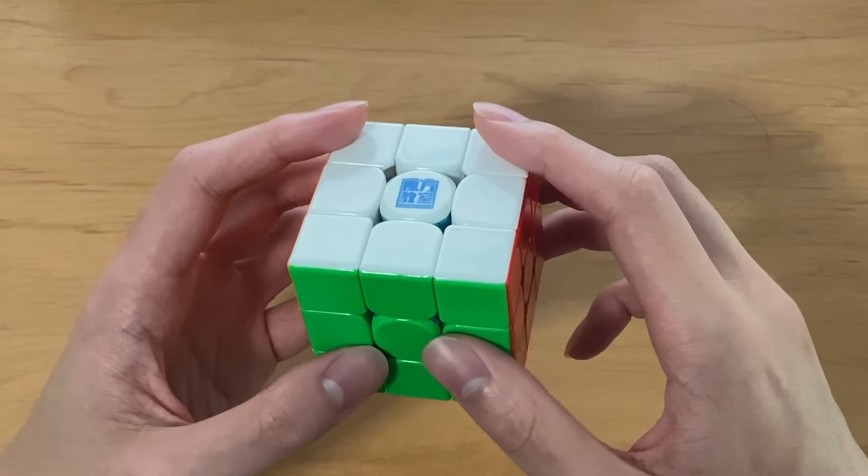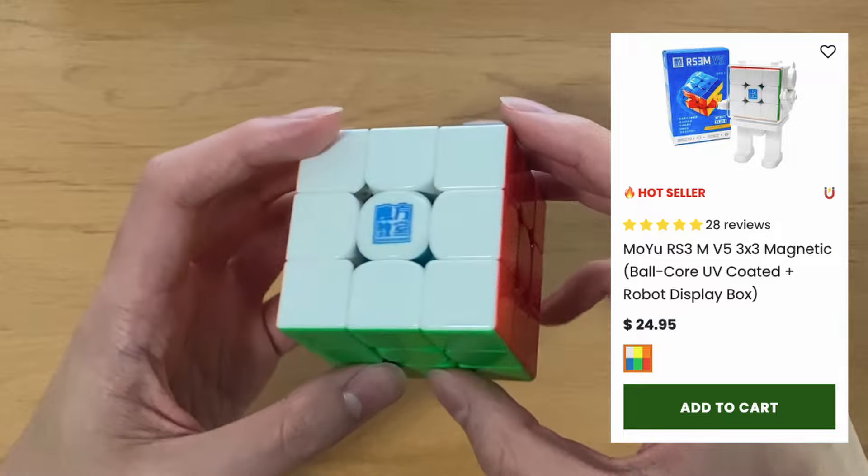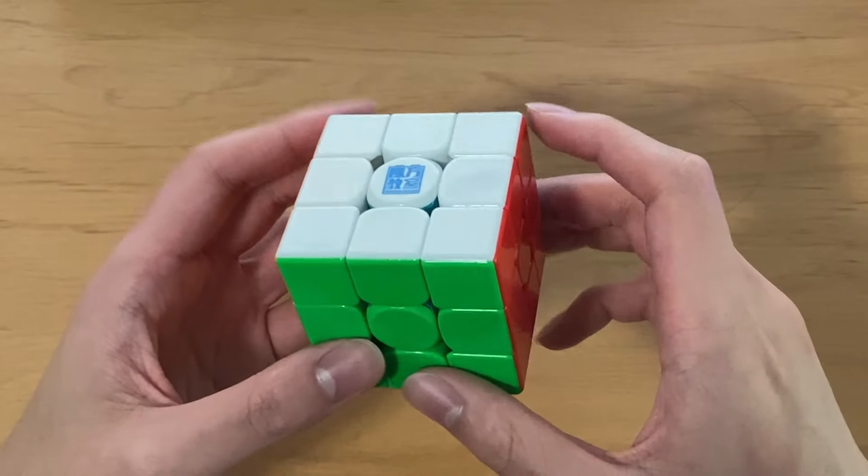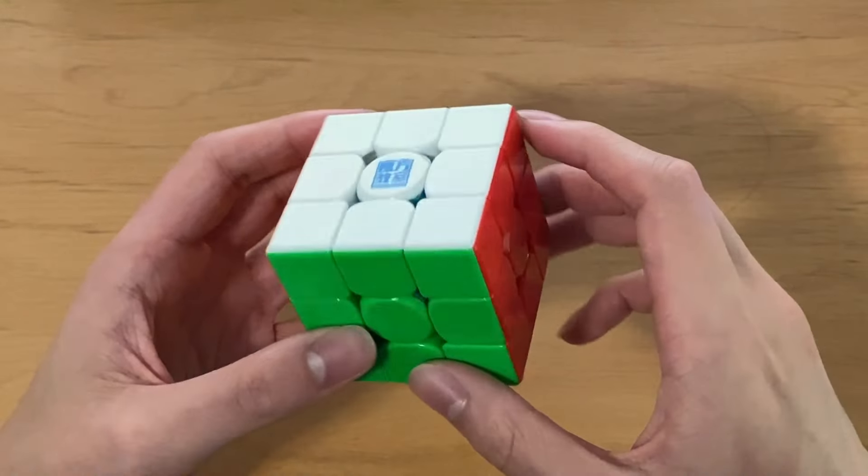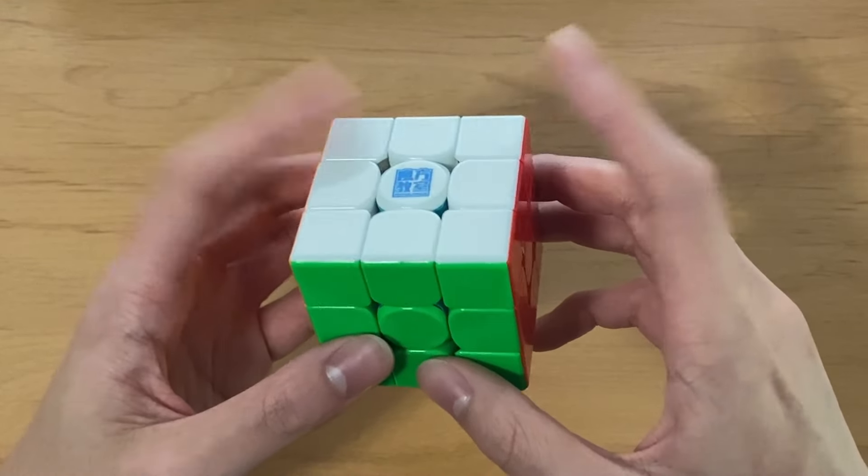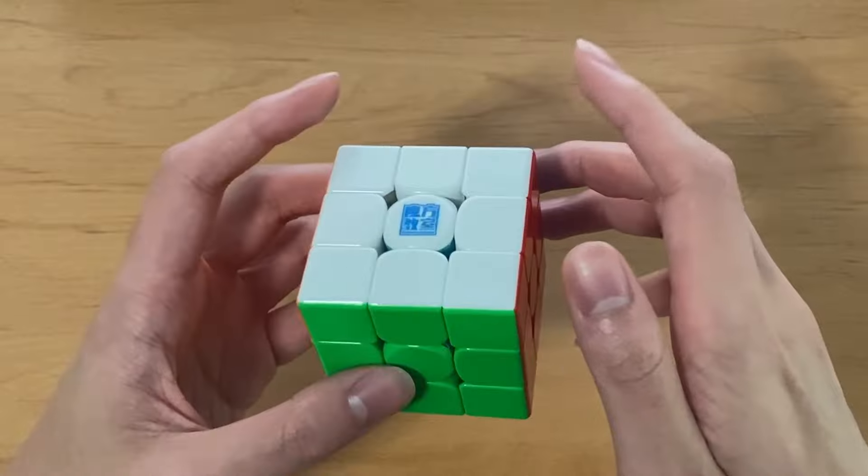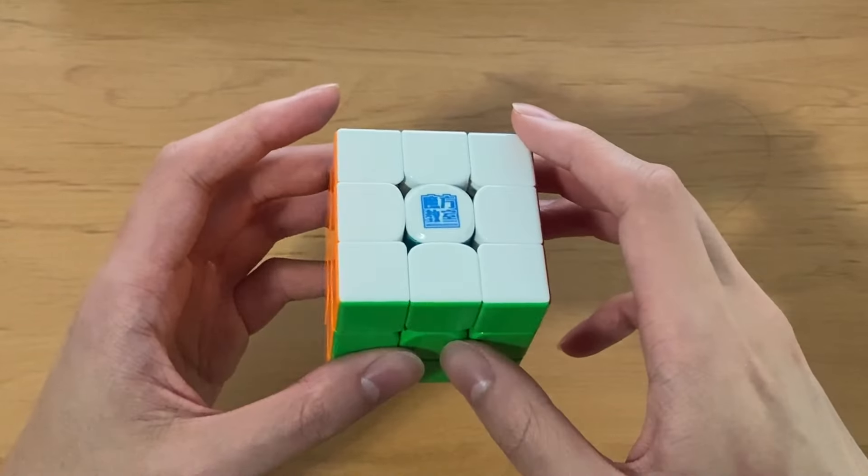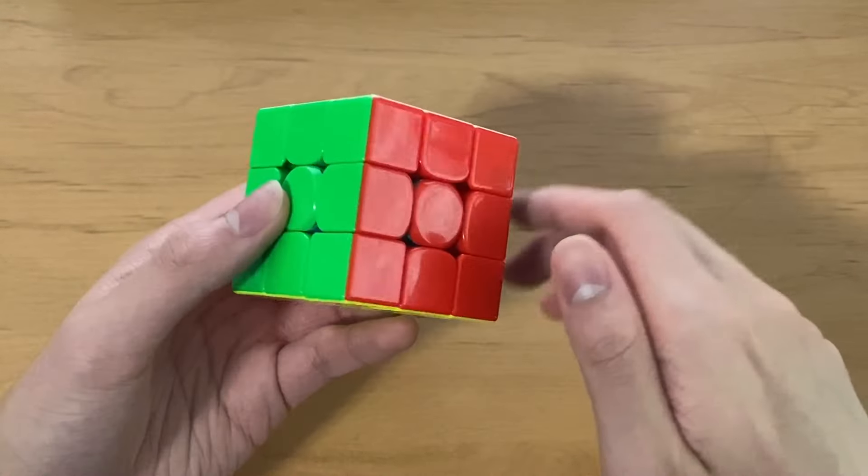For 3x3 one-handed, I use the RS3M V5 ball core UV with Maglev. I found that this cube works super well for me for one-handed turning, and I was able to drop my PR in competition by over 2 seconds just by switching to this cube. I know this cube is also very popular for one-handed and a lot of people use it, which makes sense because it has really good turning.